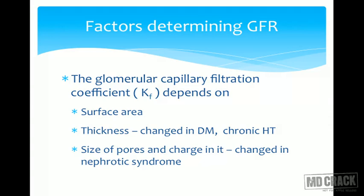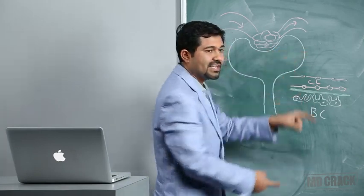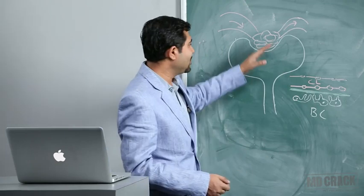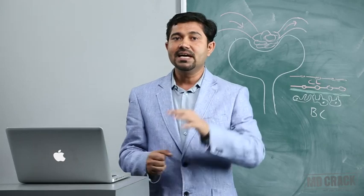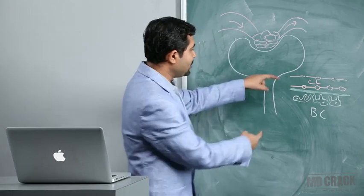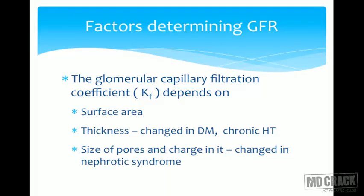This becomes important in disease conditions where some glomeruli get damaged and surface area decreases, or if there is a loss of nephrons, the filtrate formed will be less. Thickness of the glomerular capillary membrane is another factor; if it becomes thicker, filtration occurs with more difficulty and GFR decreases.